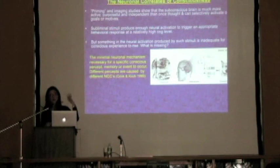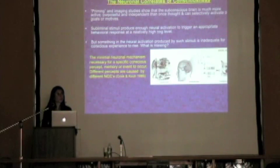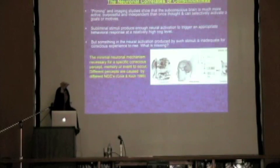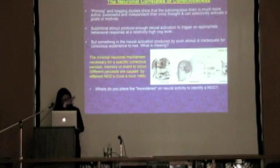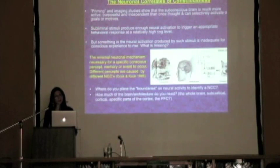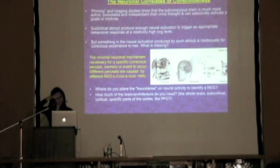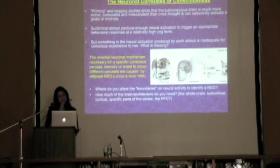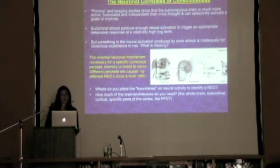But everyone seemed to ignore the 95% of brain activity that is unconscious — which also really affects behavior. Where is the line drawn between things that reach the level of consciousness and things that don't, in terms of neural basis? How much of the brain do you need for consciousness? Do you need the whole brain? Just the subcortical structures? Specific parts of the cortex? Just the prefrontal cortex? Is it an anatomical differentiation, or something to do with cell type or cell firing?